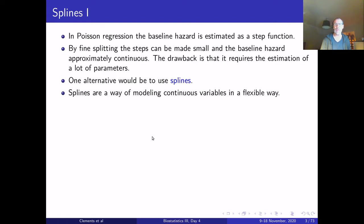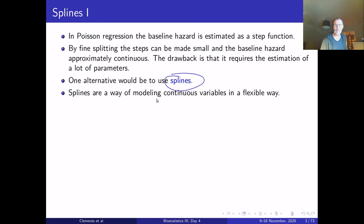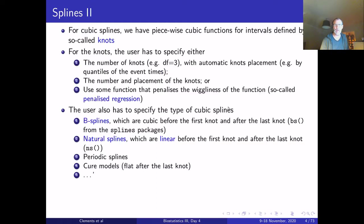We're going to use splines for smoothing. Instead of modeling time as a step function using time splitting, we can do a smoother across time intervals rather than using many parameters. One approach for doing that smoothing is to use splines, which are a way of modeling continuous variables in a flexible way in a number of different regression contexts.